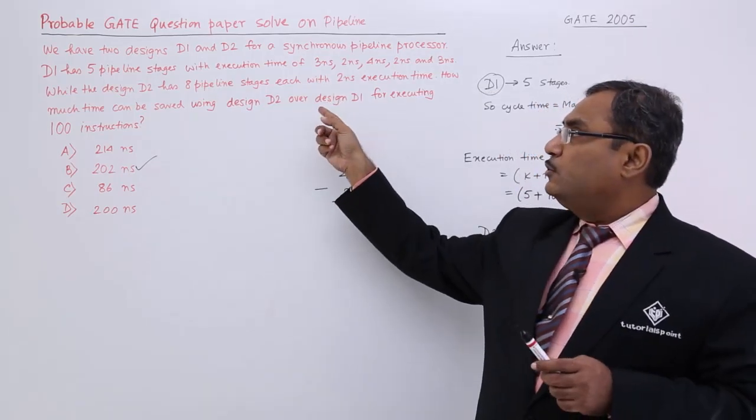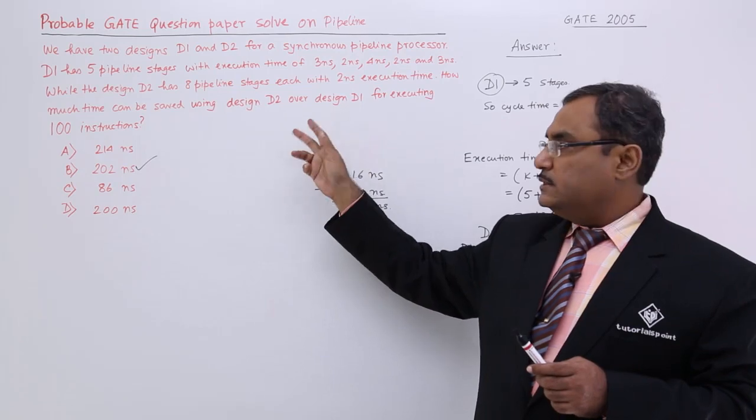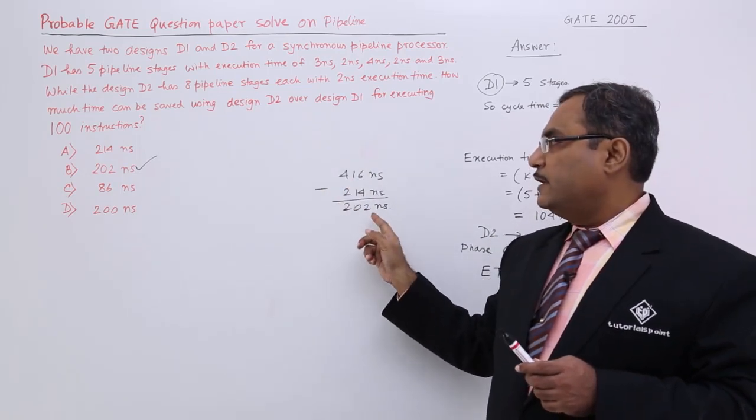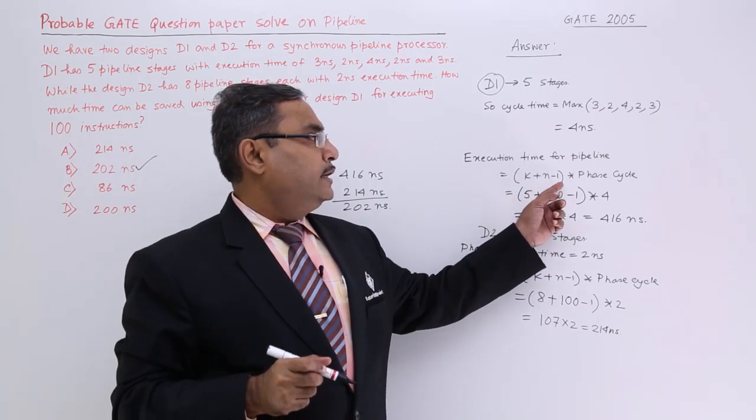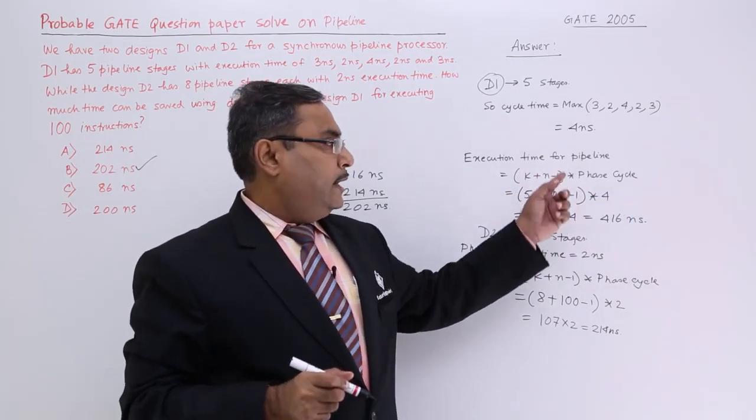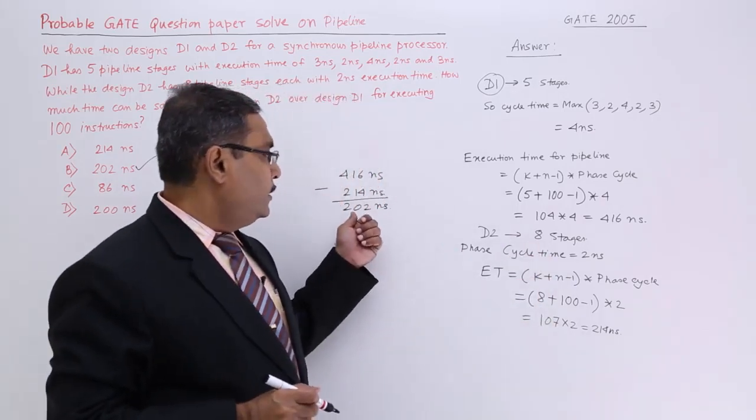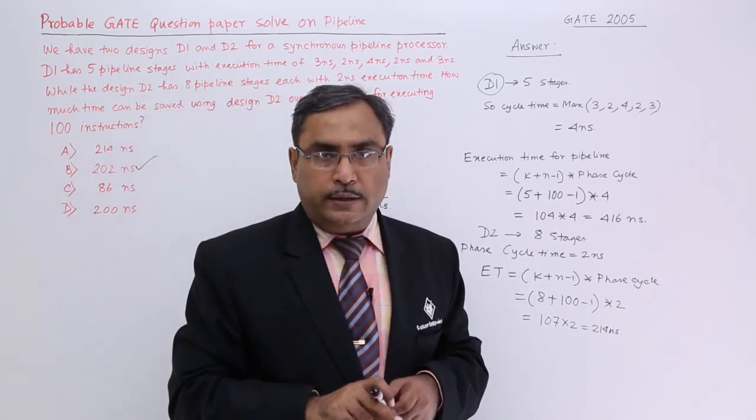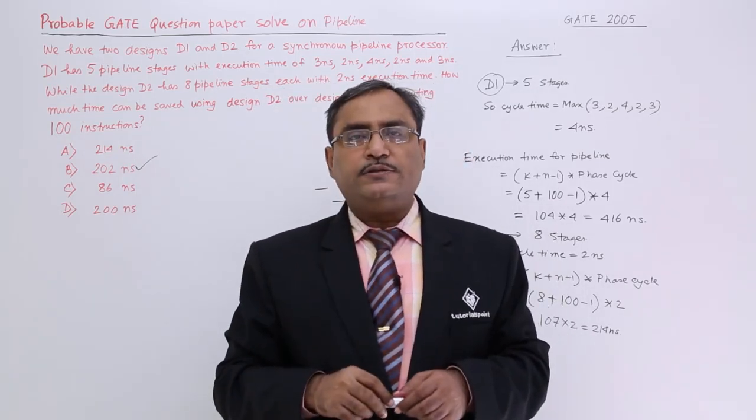In this way if you want to compare two pipelines, this sort of process may come. In this way I can go for the difference and you know the equation is K plus N minus 1 into phase cycle. I think I have discussed this one in details. Do the rough work and get the value and get the answer and put a tick. I think you have got my logic. Thanks for watching this video.